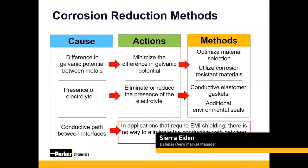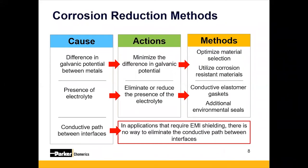We talked about the difference in galvanic potential between metals. What you want to do to mitigate that is minimize the difference in galvanic potential, which means trying to make sure the materials you choose are close on the galvanic series. For instance, if you have an aluminum housing, you would choose a silver-plated aluminum gasket — keeping those close on the galvanic series.